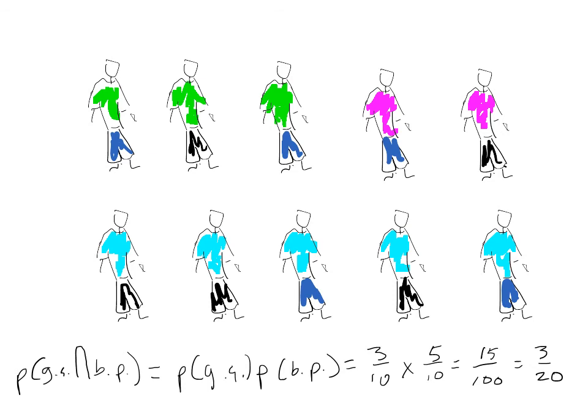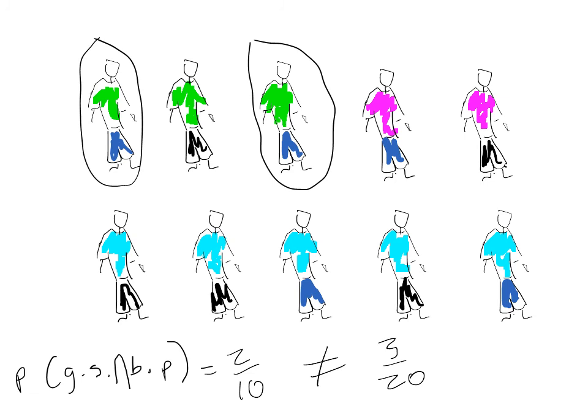Here's an example of why that small difference is really important. Say in our clothing example we assumed the probability of wearing a green shirt was independent of wearing blue pants. We would use the first formula: probability of a green shirt times probability of blue pants, which is 3/10 times 5/10, or 15/100, equaling 3/20. But we know by counting that the actual probability of wearing a green shirt and blue pants is 2 out of 10, not 3 out of 20. This difference is because people who wear blue pants are more likely to also be wearing a green shirt.